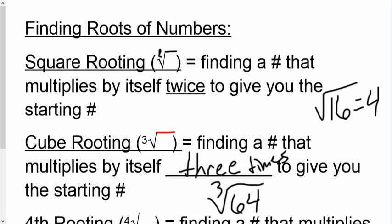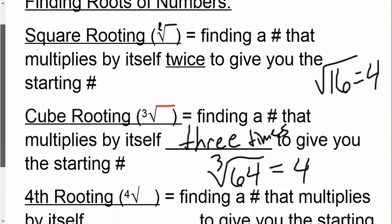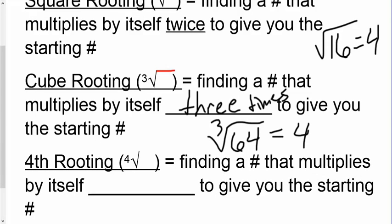To give you the starting number. So if I have the cube root of, say, 64, what times what times what gives me 64? That answer would be 4. The last kind of root that we'll really talk about is a 4th root, where you're finding a number that multiplies by itself 4 times to give you the starting number.